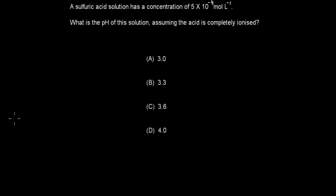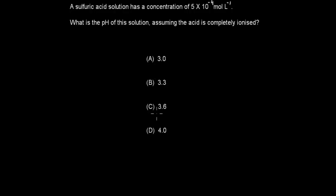The first question: A sulfuric acid solution has a concentration of 5 × 10⁻⁴ moles per liter. What is the pH of this solution, assuming that the acid is completely ionized? A) 3, B) 3.3, C) 3.6, D) 4.0. Pause the video and attempt the question.